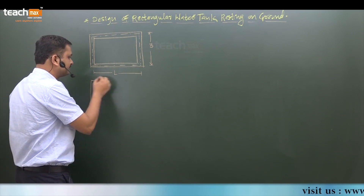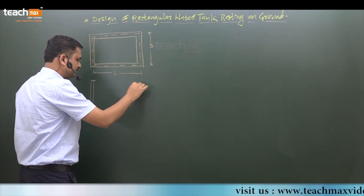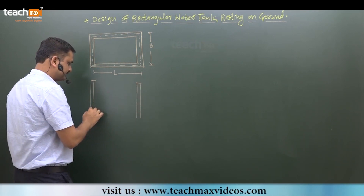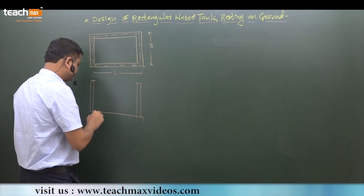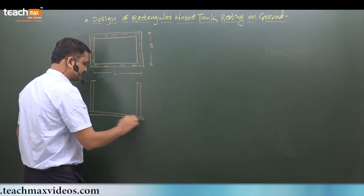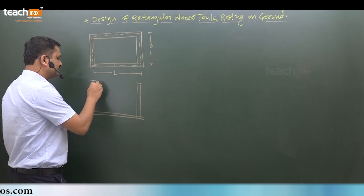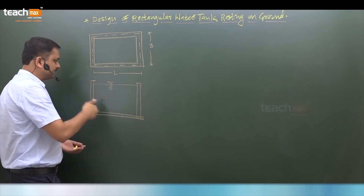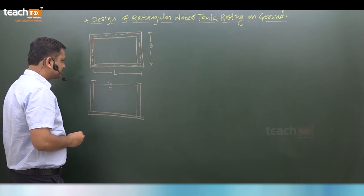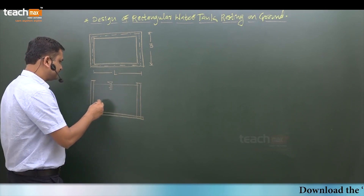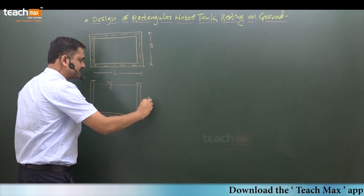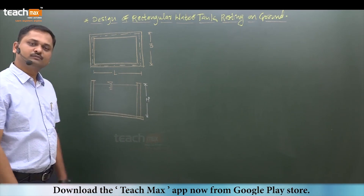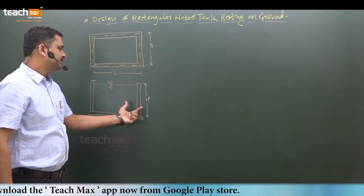If you draw the elevation of this water tank it will look like this. The open top is free — no slab is provided over the top. This is the level of water we assume, and these are the walls. The height is H — the overall height of the water tank. So the three dimensions are L, B, and H.